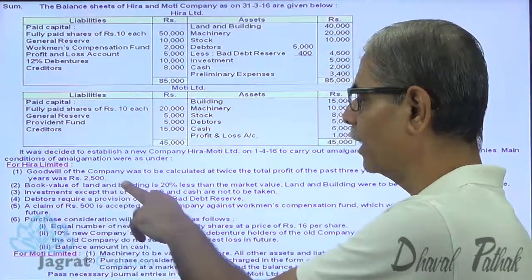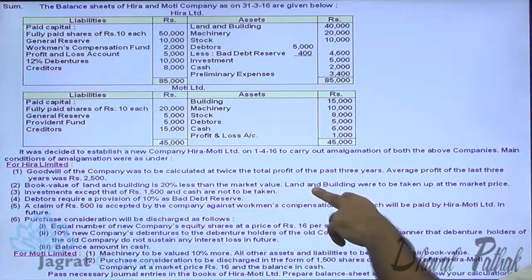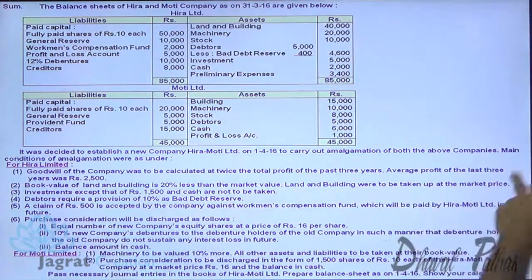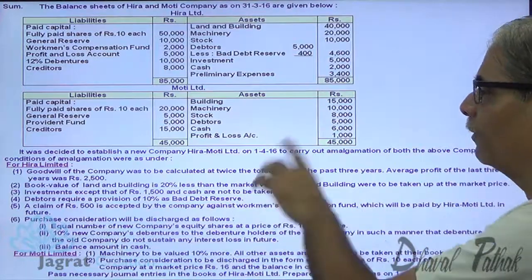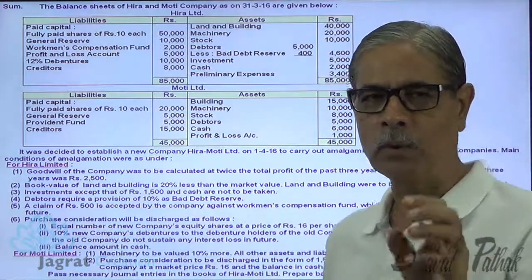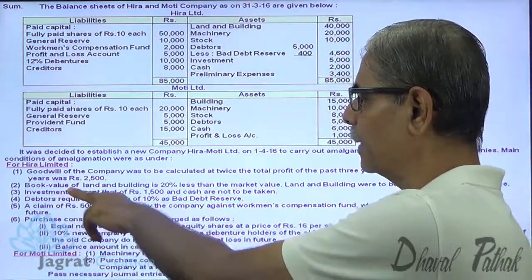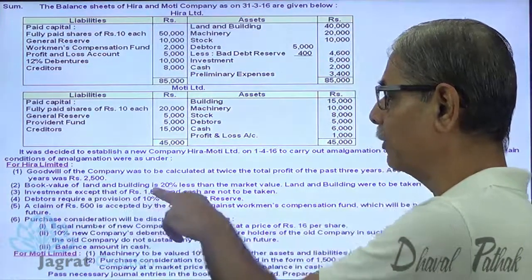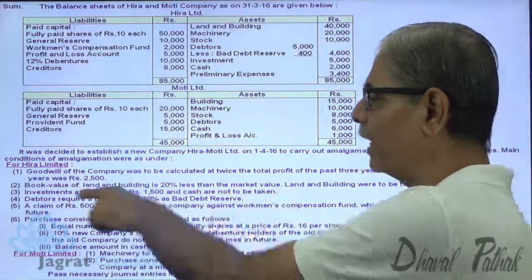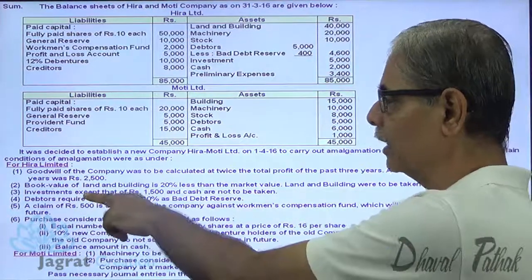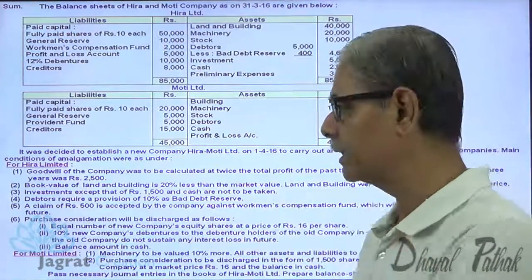The book value of land and building is 20% less than the market value, so land and building were to be taken at market price. We are required to find out the market value, which will be recorded while calculating the purchase consideration. Investments except that of 1,500 and cash are not to be taken — this is a very important adjustment whose interpretation is crucial.